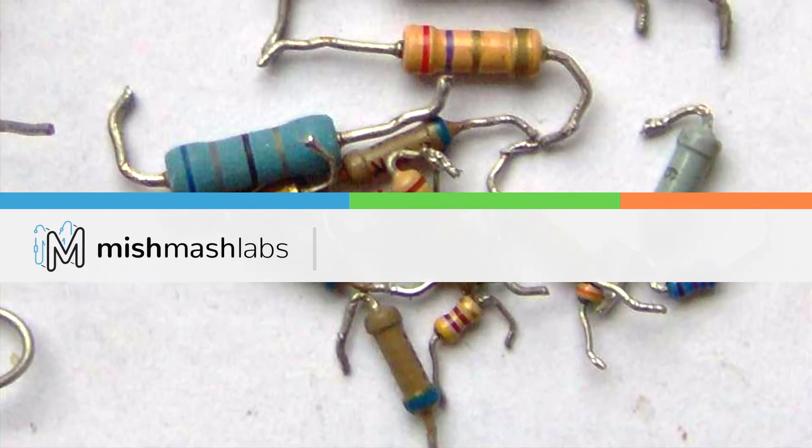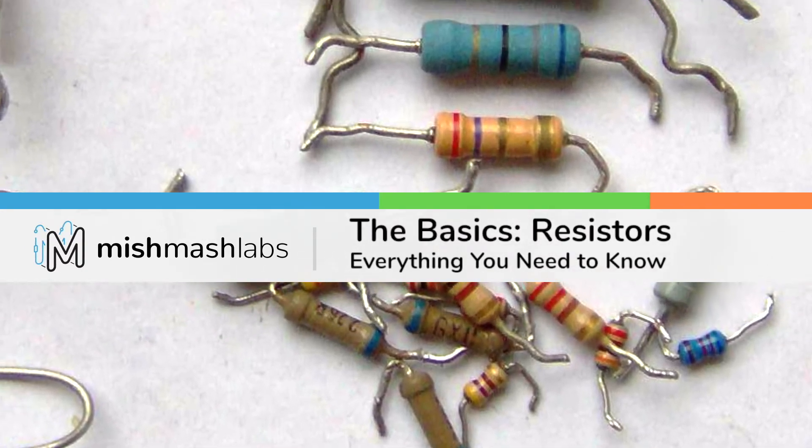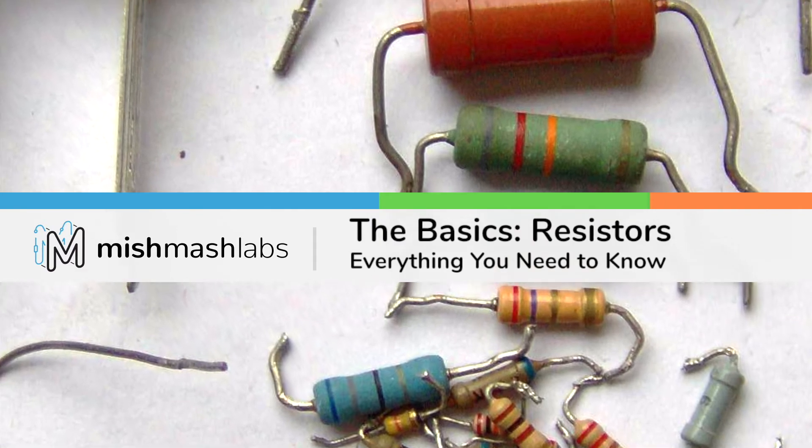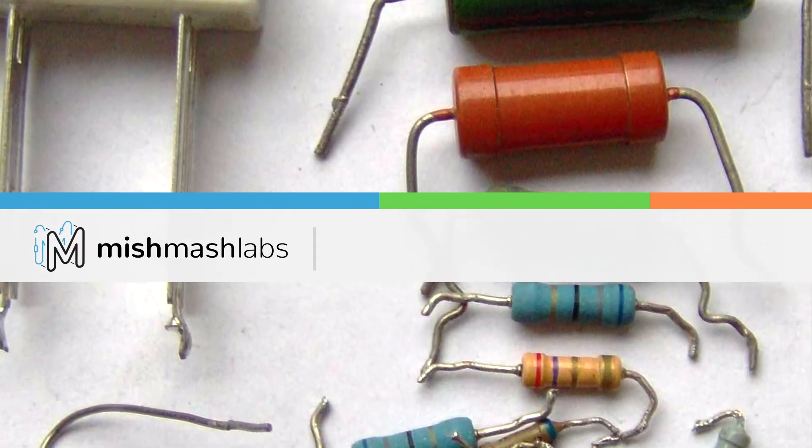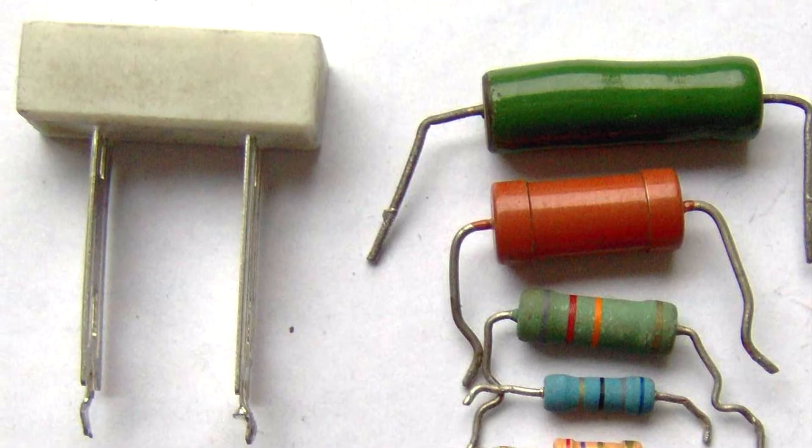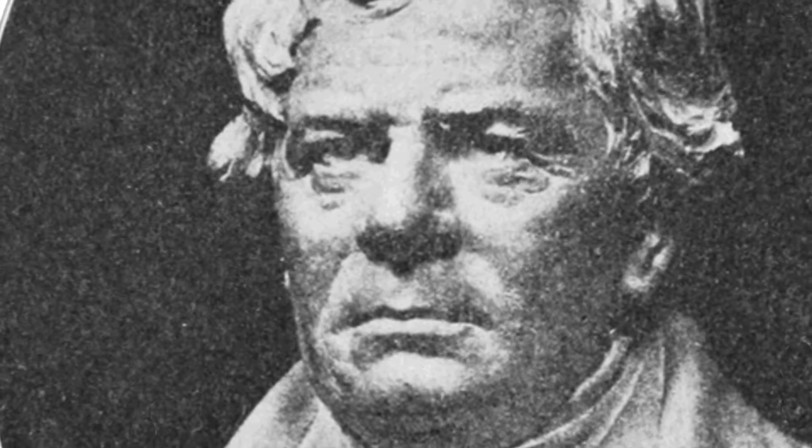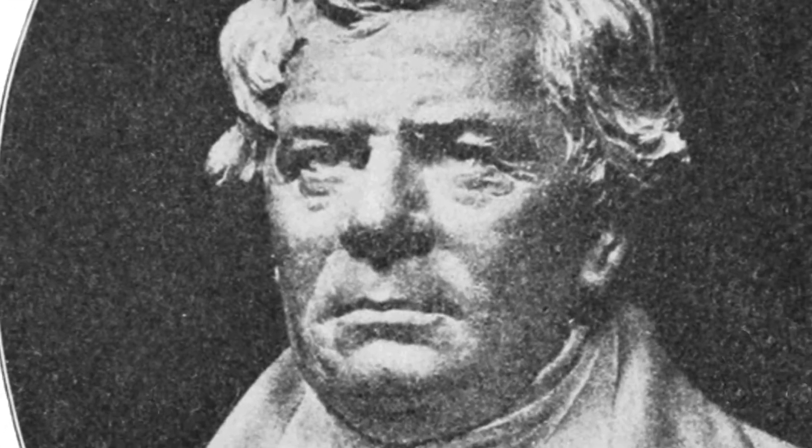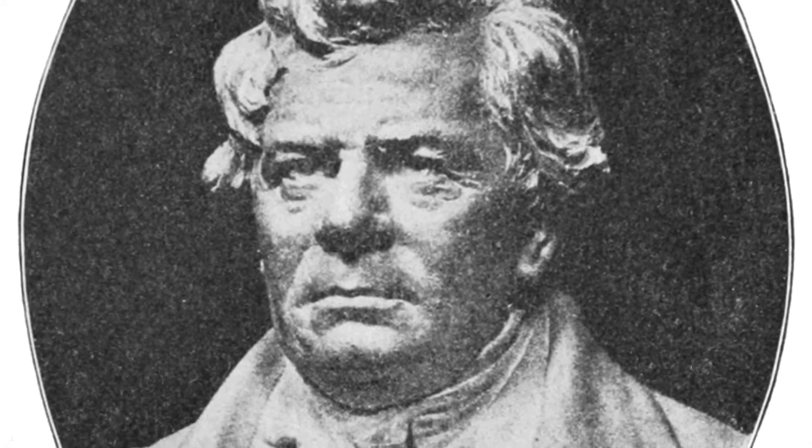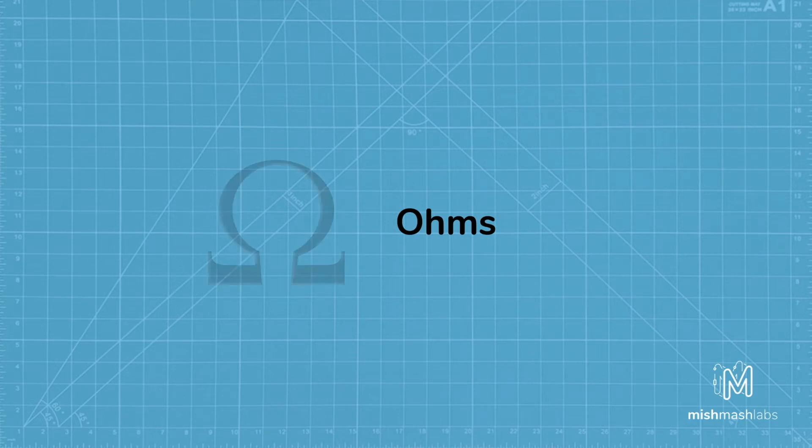Resistors are electronic components which have a specific and never changing electrical resistance. Resistors work by limiting the flow of electrons through a circuit. They are passive components which means they consume power but can never generate it. The electrical resistance of a resistor is measured in ohms, named after the creator of Ohm's law, the German mathematician and physicist Georg Simon Ohm. The symbol for an ohm is the Greek capital letter Omega.